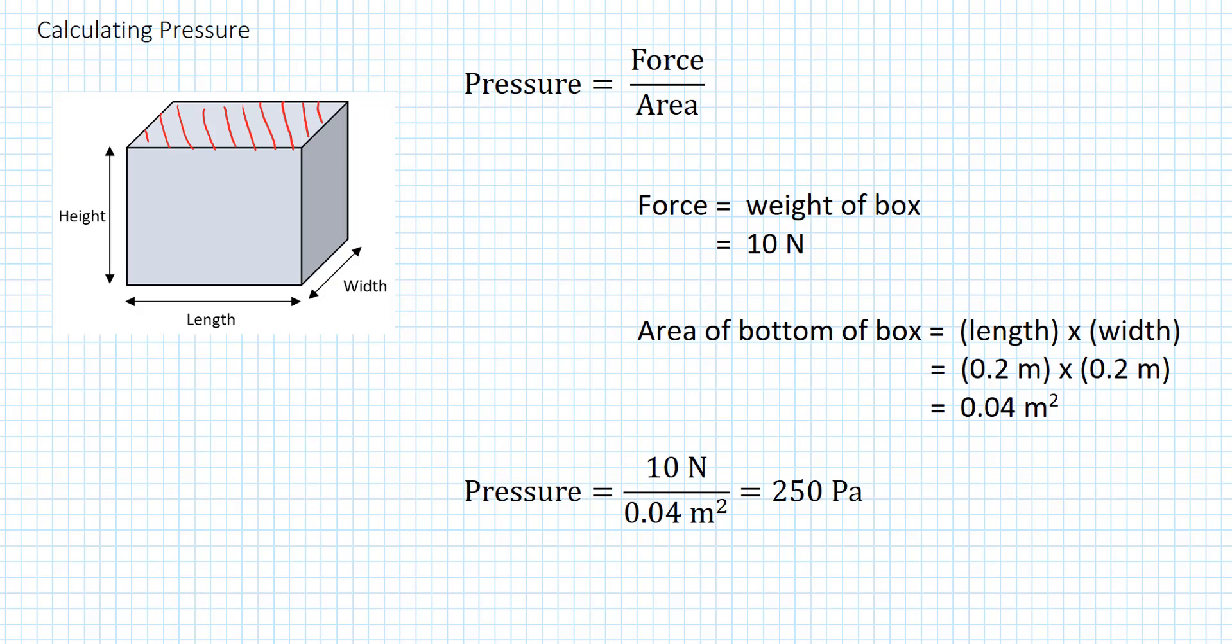And we get tired of writing Newtons per square meter all the time, so we come up with another unit that stands for that. And that's the Pascal. One Pascal is the same as a Newton per square meter. So our pressure in this case is 250 Pascals.